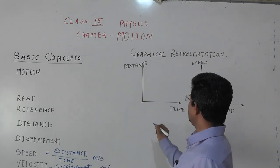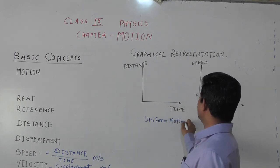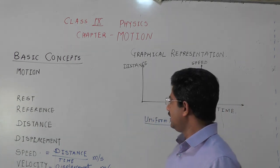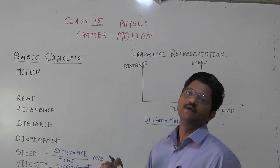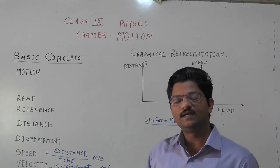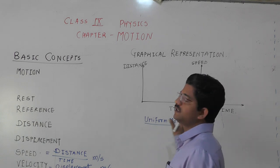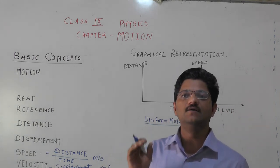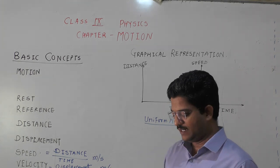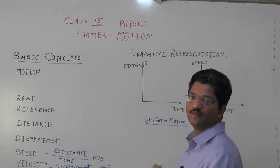Now we are going to see what exactly uniform motion and non-uniform motion are. Uniform motion is that kind of motion in which equal distances are covered in equal time intervals. That motion is called uniform motion.